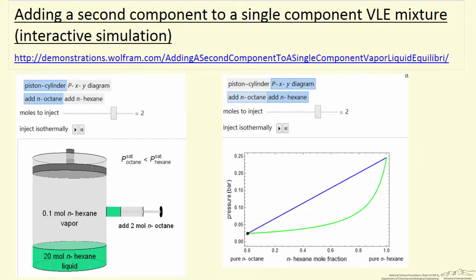I'm going to describe an interactive simulation represented here: a piston and cylinder containing normal hexane in vapor-liquid equilibrium. We're going to add to this system normal octane liquid.